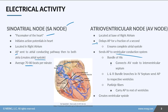The ventricular conduction system is broken up into three parts: you've got the bundle of His, the left and right bundle branches, and the Purkinje fibers. The bundle of His goes down and connects the atrioventricular node to the interventricular septum. The action potential is sent down the bundle of His and then goes to the left and right bundle branches within the interventricular septum, sending the action potential outward to the respective ventricles.